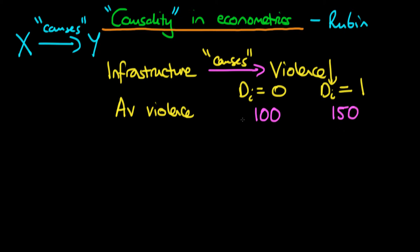This seems a bit confusing, because we were hoping it was the other way around. The reason is that the relationship dominating here is a reverse causal relationship. In other words, those states which had high levels of violence were more likely to be selected to receive spending in order to decrease their violence. So more was spent in states that were actually more violent, and it's that which is reflected in the averages — not that infrastructure spending causes violence to go up. It's what we call selection bias which is dominating here.